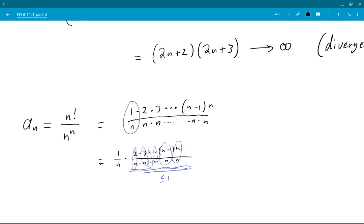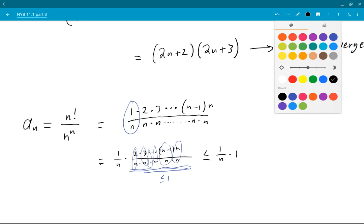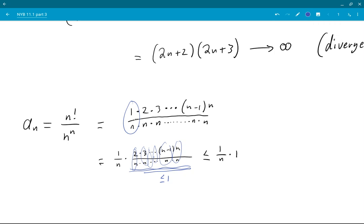Okay, so from that I conclude that I have 1 over n dot 1 over here. So the thing that I marked up in blue, if I replace it with 1, I get something overall that's bigger.